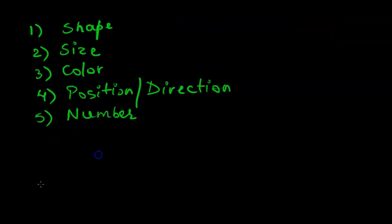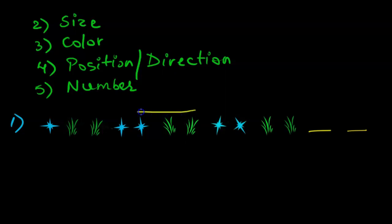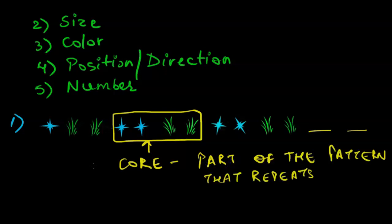Let's understand this with an example. We're given a blue star, two blue stars, two grass shapes, two blue stars, two grass — and so on. We can see that the two blue stars and the two grass shapes are getting repeated. Whatever gets repeated in a pattern is called its core. The core is the part of the pattern that repeats.